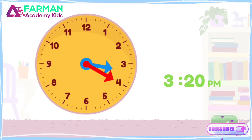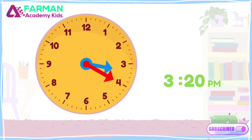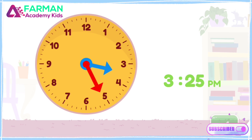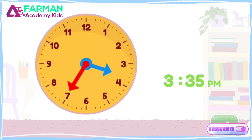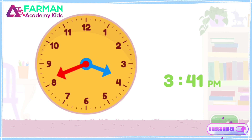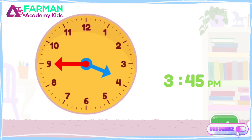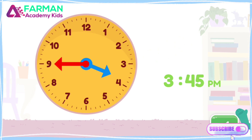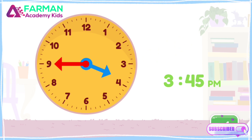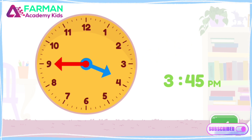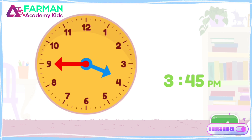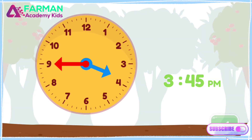Move the minute hand on the round clock to show 3:45 p.m. You made the clock show 3:45 p.m. This is when I usually get home and play some music or games.